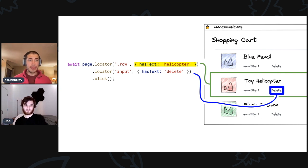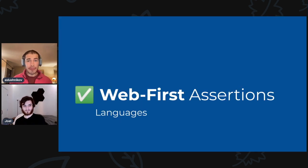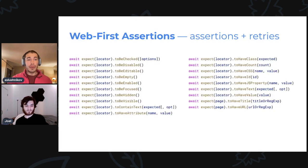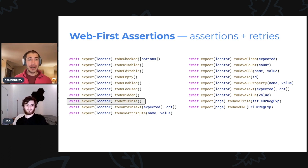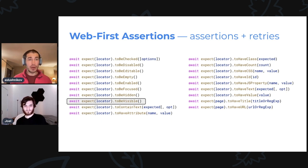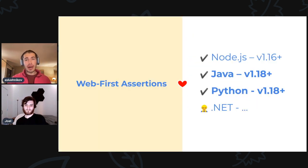But historically, this has not been the case for some of our features. Now I want to do a short recap of other features. The first is web-first assertions — this combination of assertions and retries. For example, expect Locator to be visible will retry and refetch this element from the page until it is actually visible. We call these web-first assertions, and these have been available since around 1.16. This proved to be a very successful experiment and is very handy for all kinds of automation. So with this release, we bring it to other languages — Java and Python — and it will come to .NET in a future release.